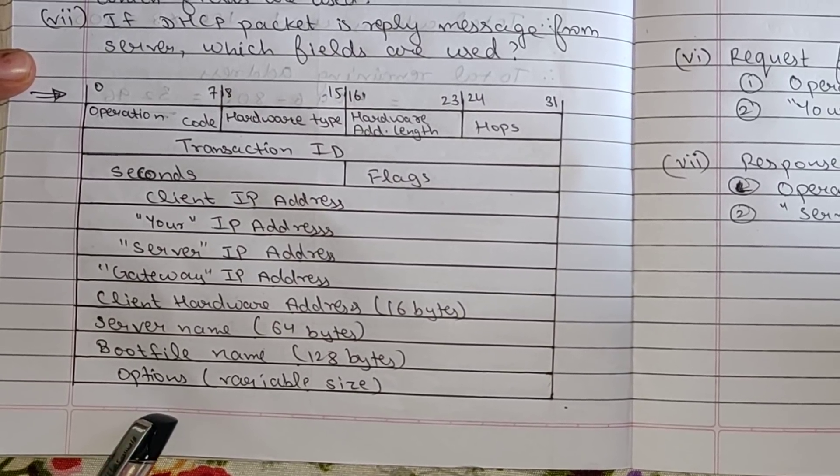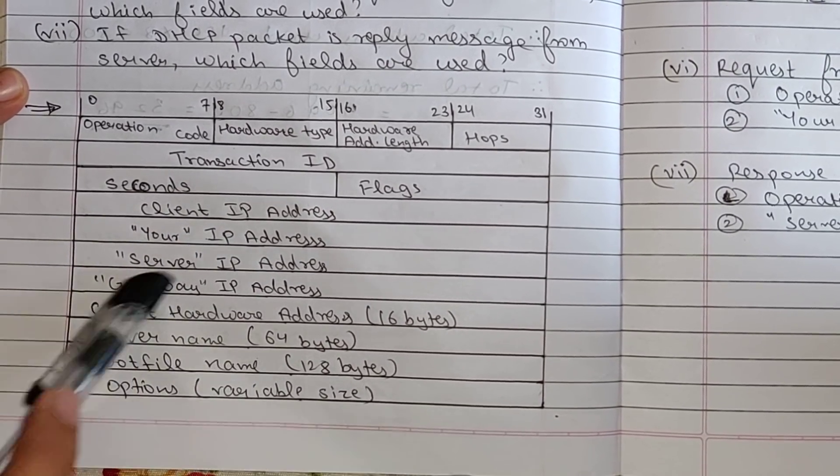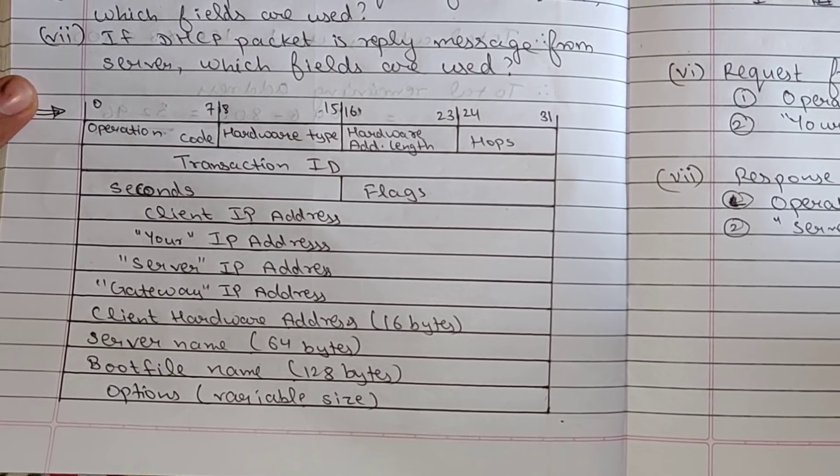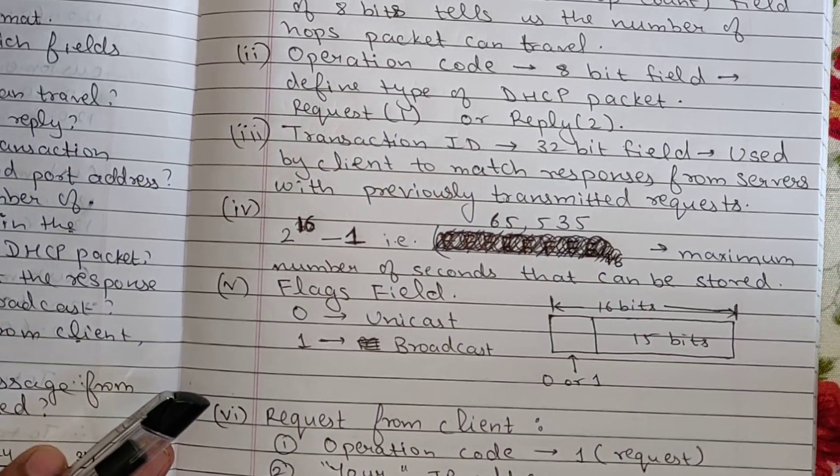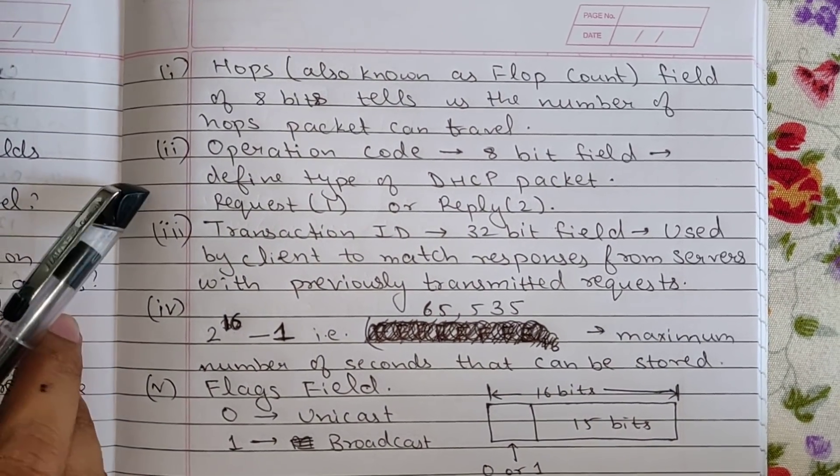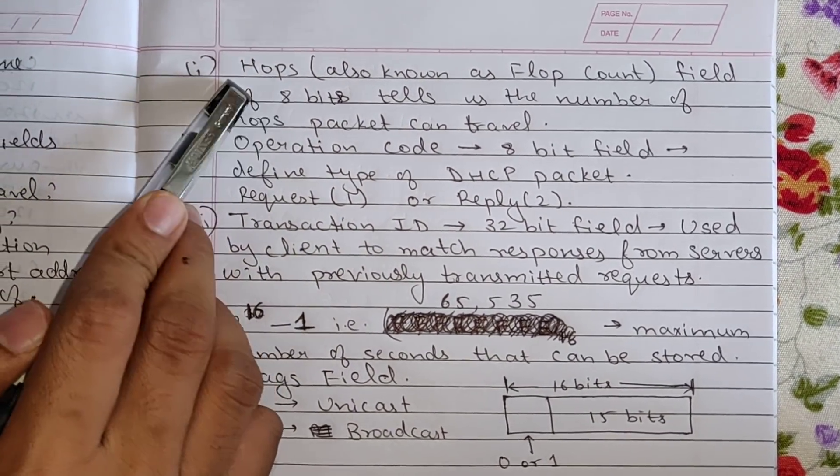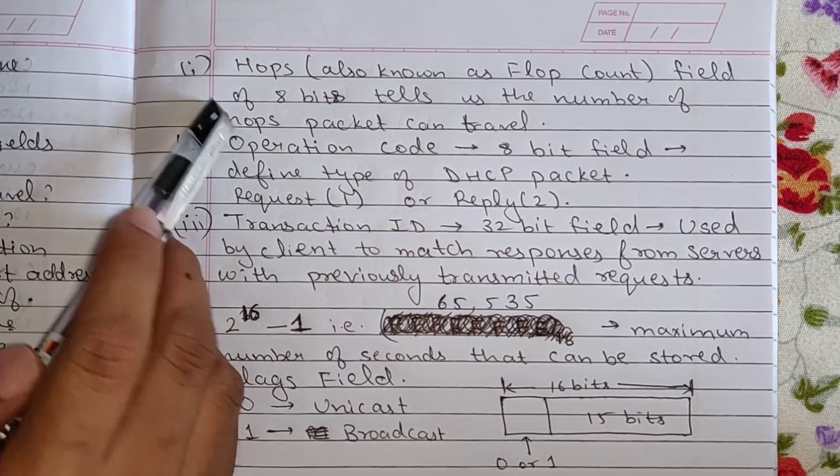And finally we have options which is of variable size. So this is my DHCP packet format. Next let's answer the questions that was asked. So the first question that was asked, I have written it down in the description below, so it's hops, the number of hops of a packet can travel.